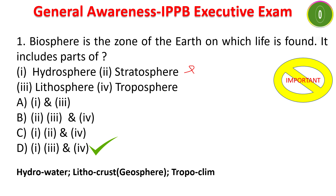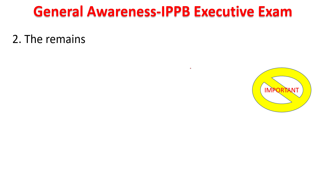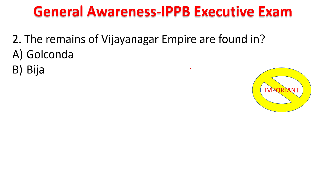Hydrosphere is about water, lithosphere is about the crust under the soil and is also called geosphere, and troposphere is about the climate where you find sunlight and rain. Stratosphere is where you find the ozone layer, UV rays, and where jet planes go. These are the different spheres.